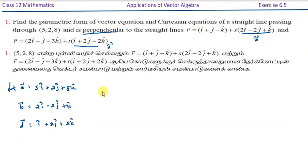Now we have to calculate b vector cross d vector, which is equal to the determinant. Open i, j, k. This is the i cap. Now we have the second row of b vector components: that is 2, minus 2, 1. D vector is third row components: 1, 2, 2.